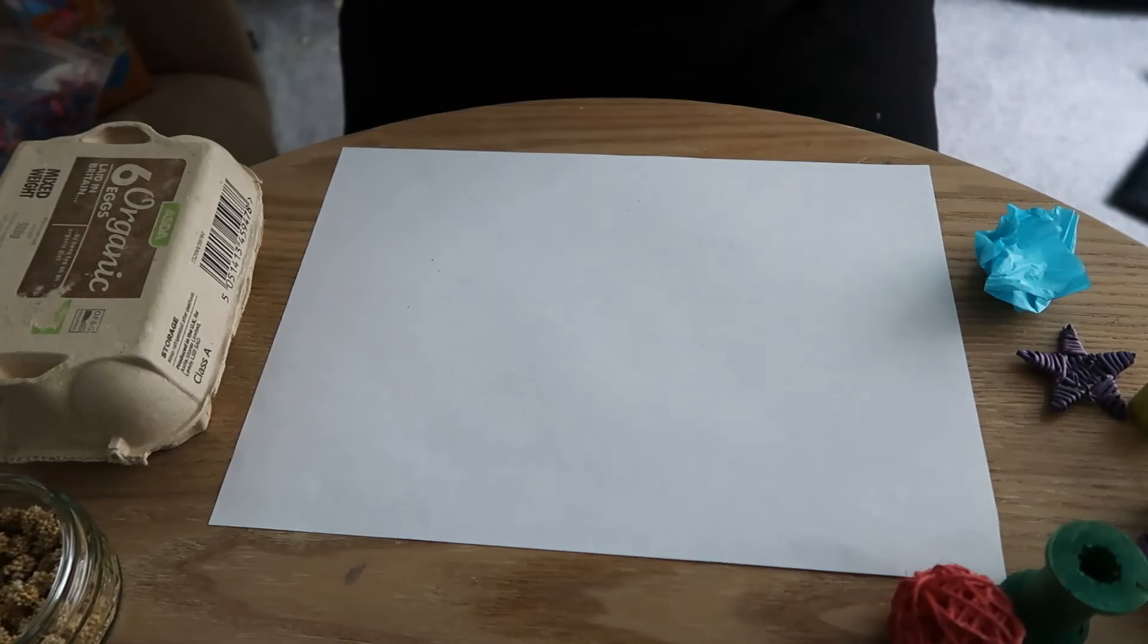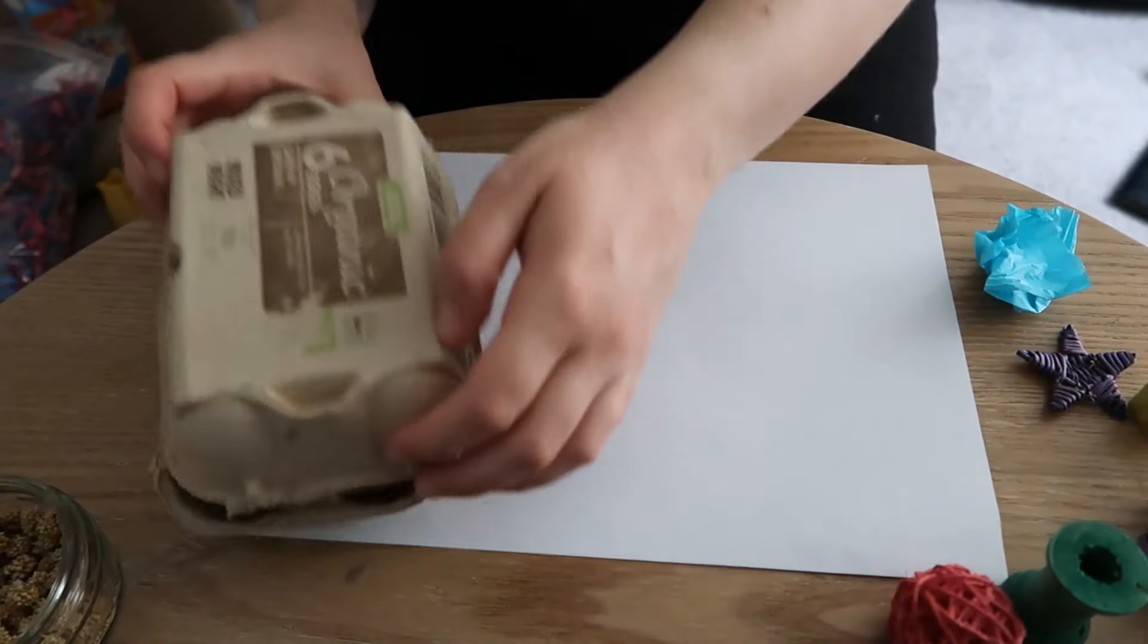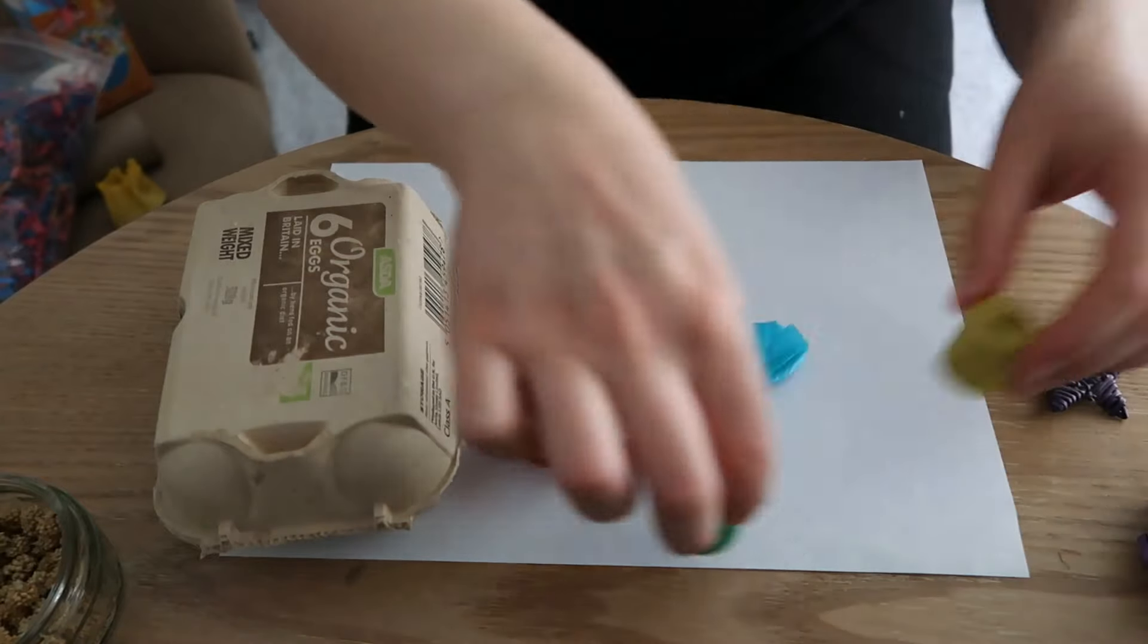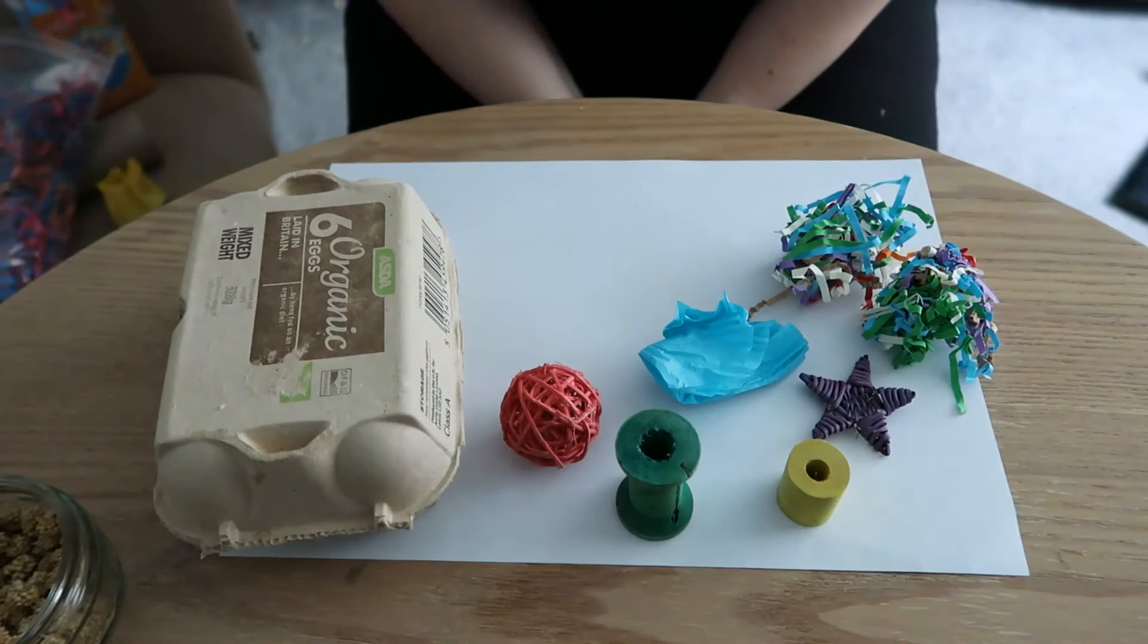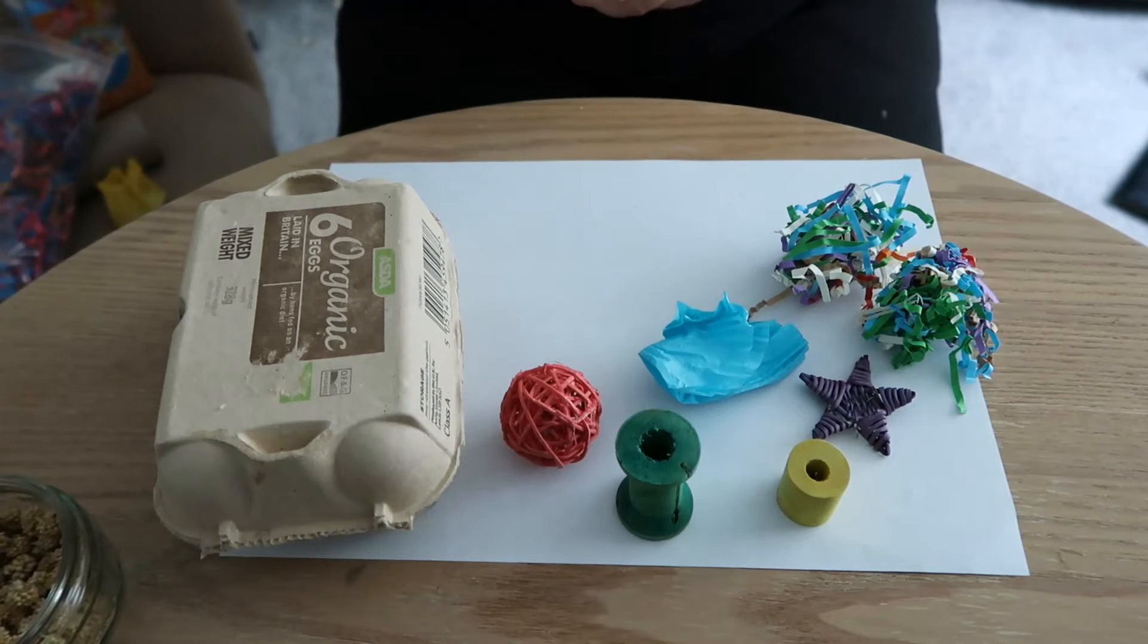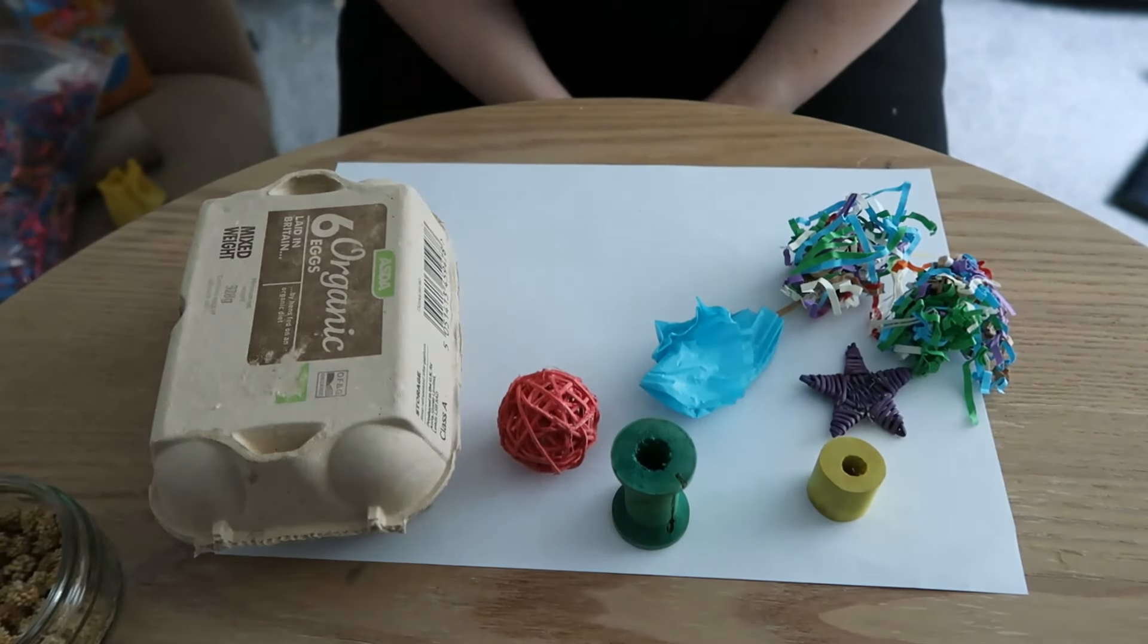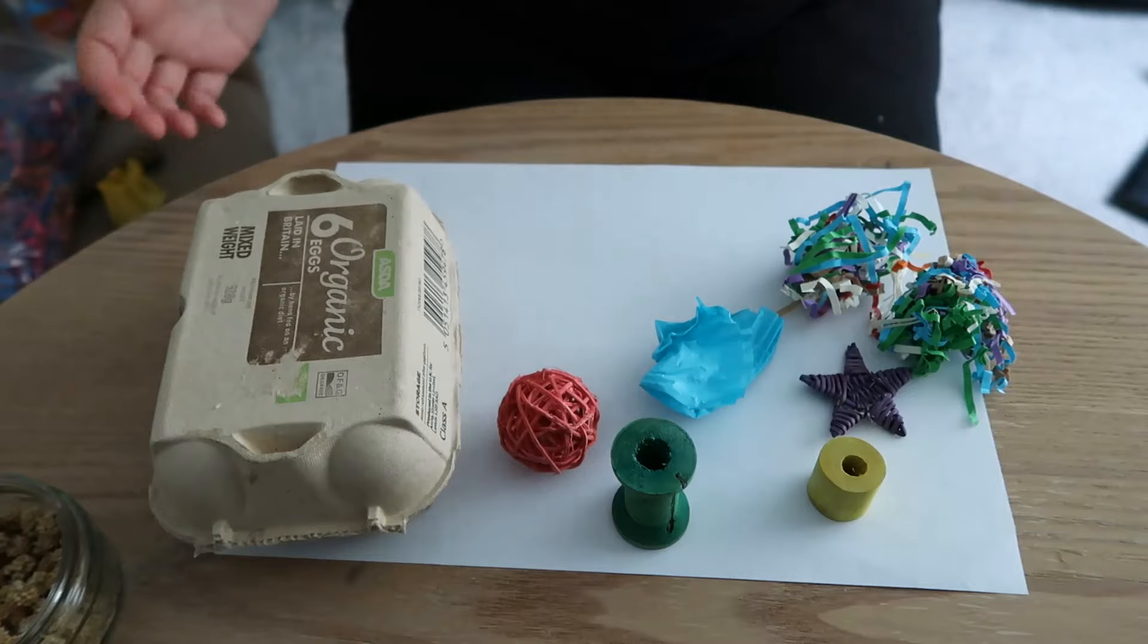So for today's final bird toy, you are going to need an egg box and then all of the broken bird toys that your bird has destroyed in your home. Now parrots of course in nature are destructive, and you're probably going to find that they've destroyed their toys and you've got all these bits and pieces lying around that may end up in the bin. But fear not, you can create them into a brand new toy.